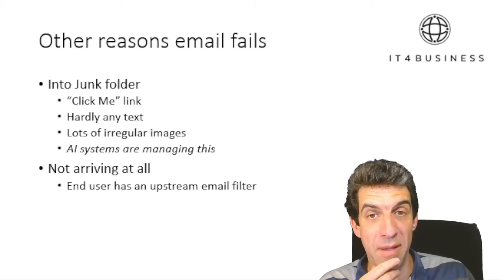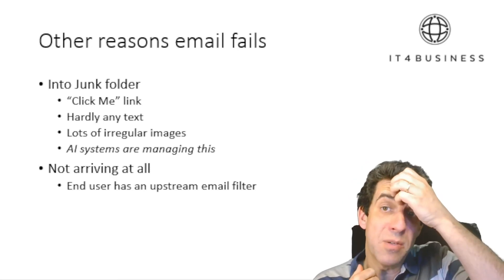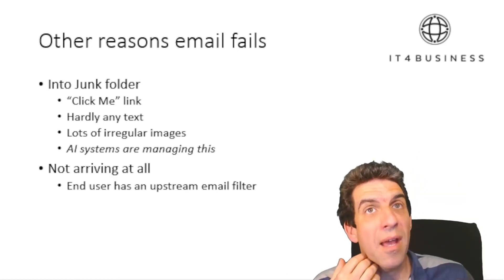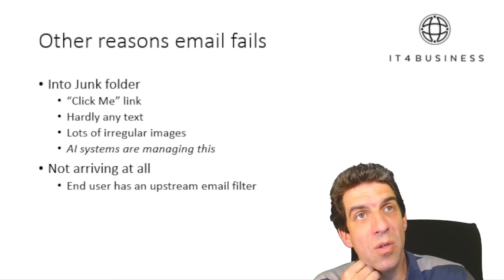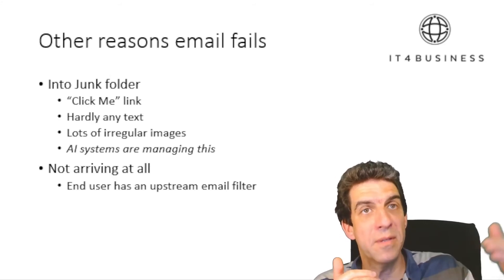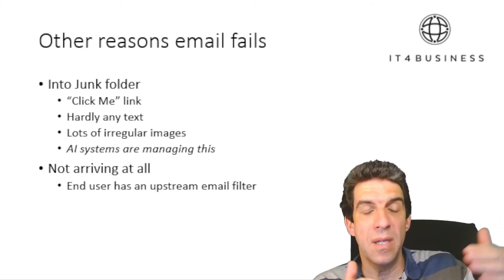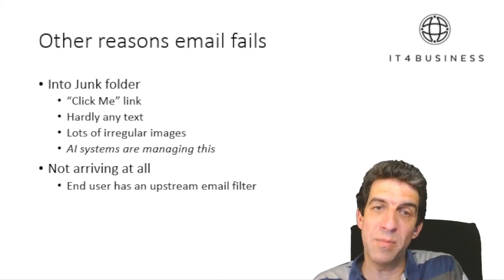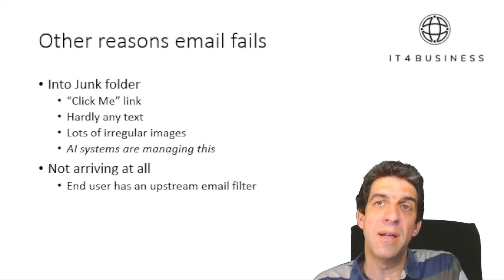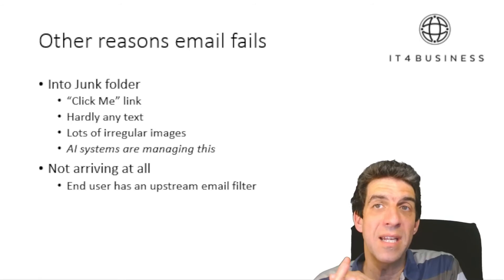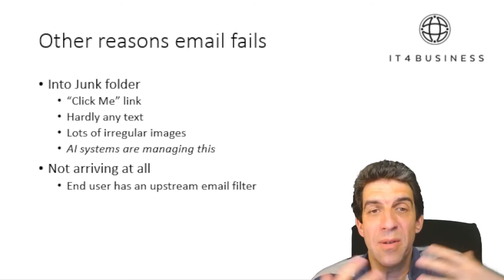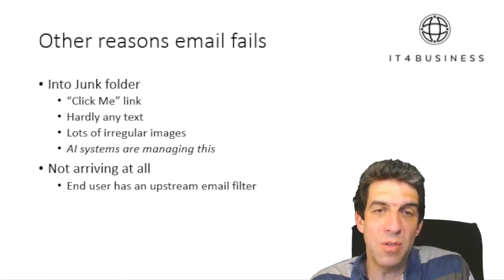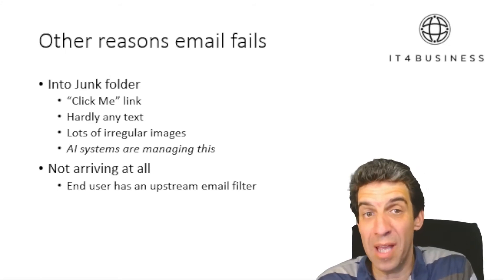There's another situation where your email just doesn't arrive at all. That could be because the recipient has an upstream filter — they don't receive any emails unless they've predefined who's acceptable. This is increasingly an issue, so as a mail campaign manager you need to tell people: please make sure you've added my email address to your allowed list.